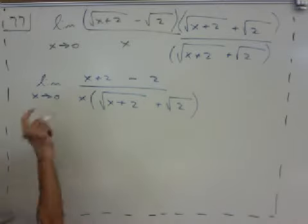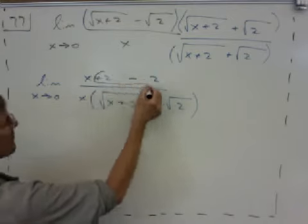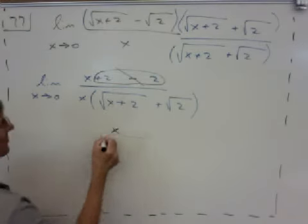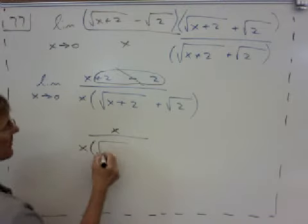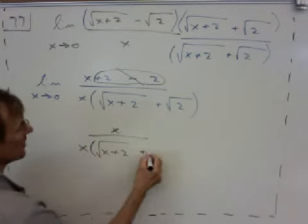So what's going to happen in the numerator is the plus 2 and the minus 2 are going to cancel. So we end up with just x over x times this conjugate in the denominator, root x plus 2 plus root 2.